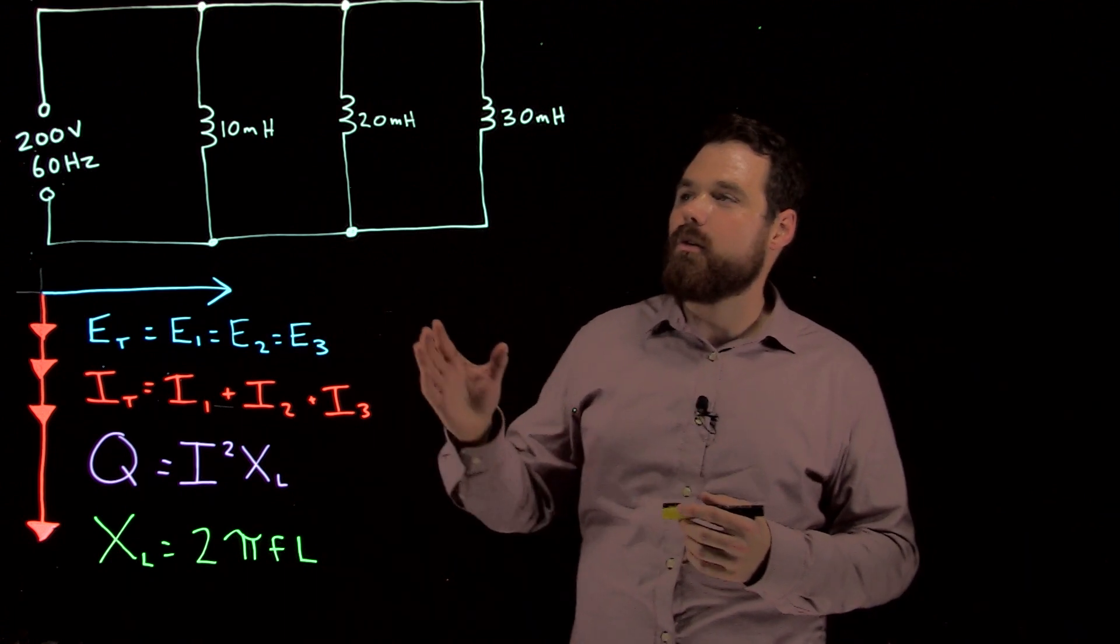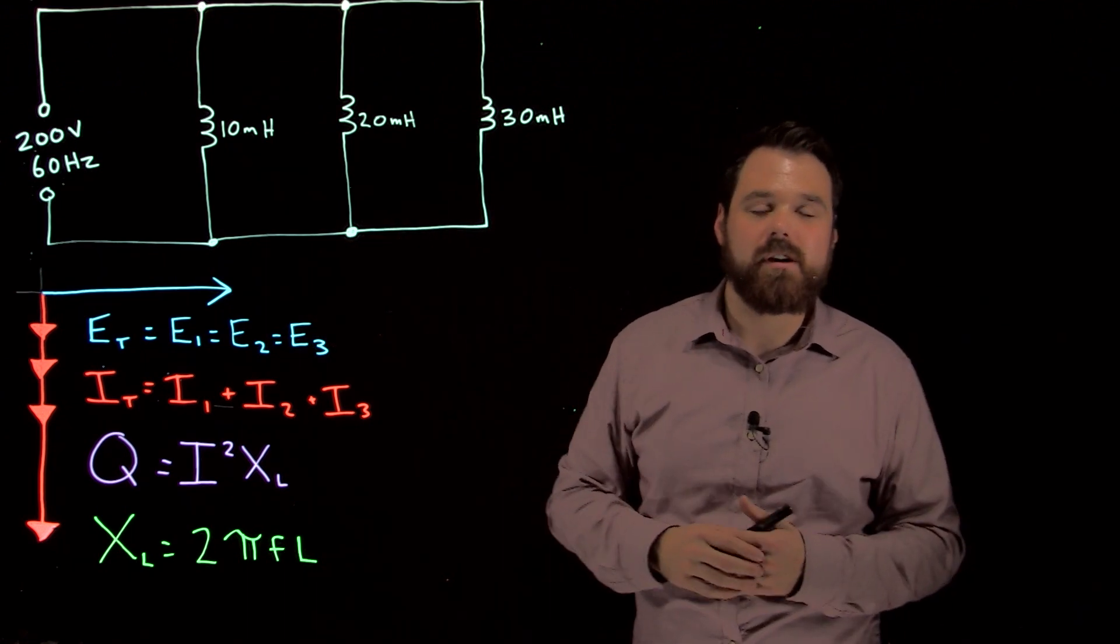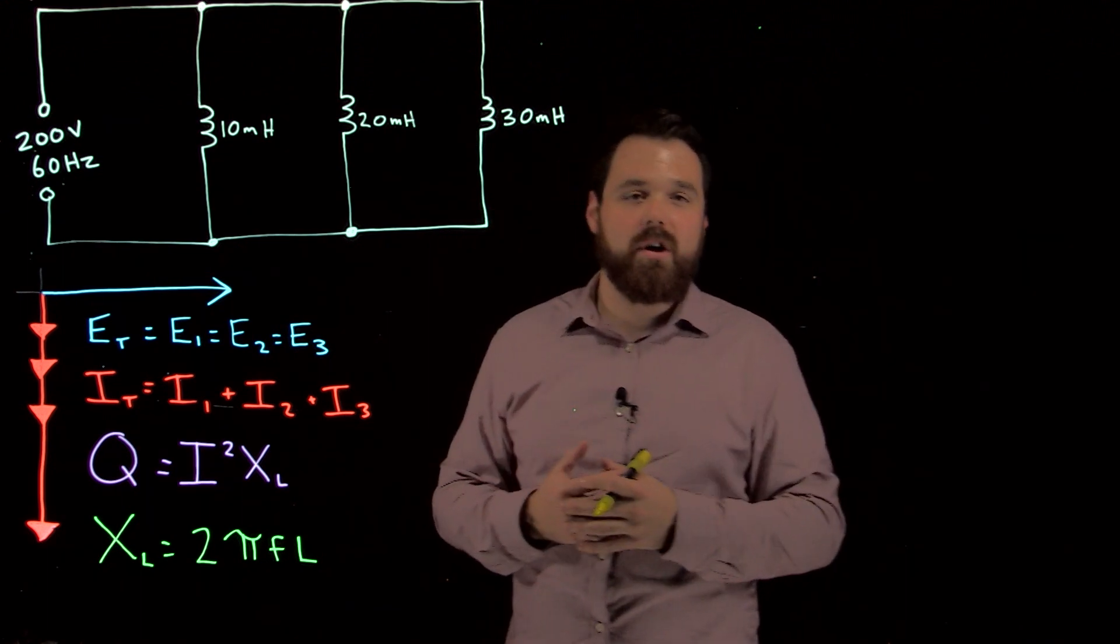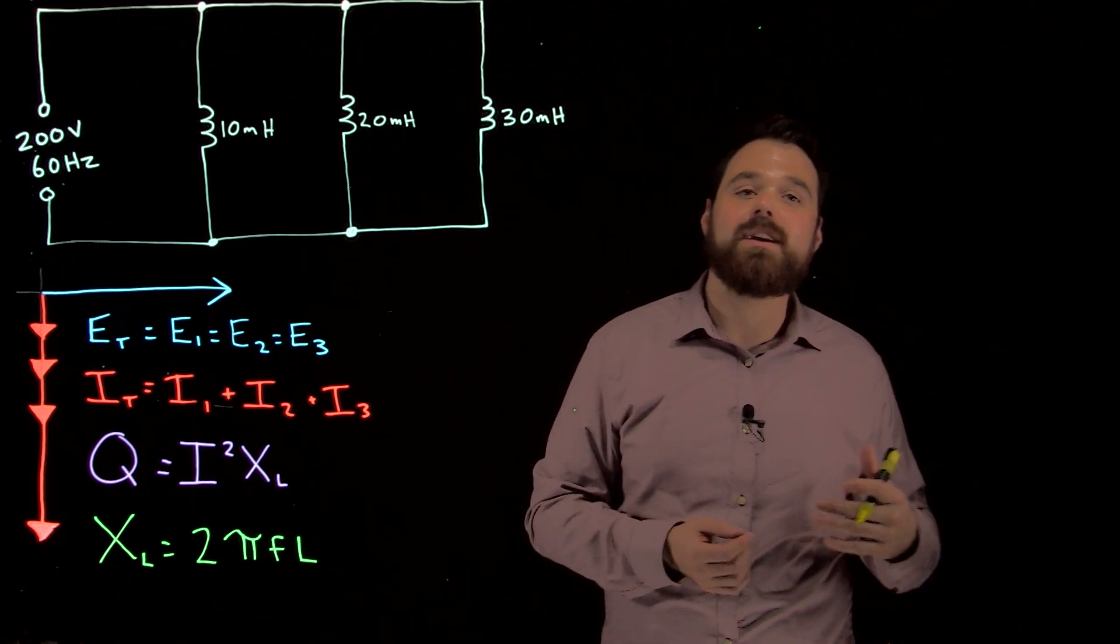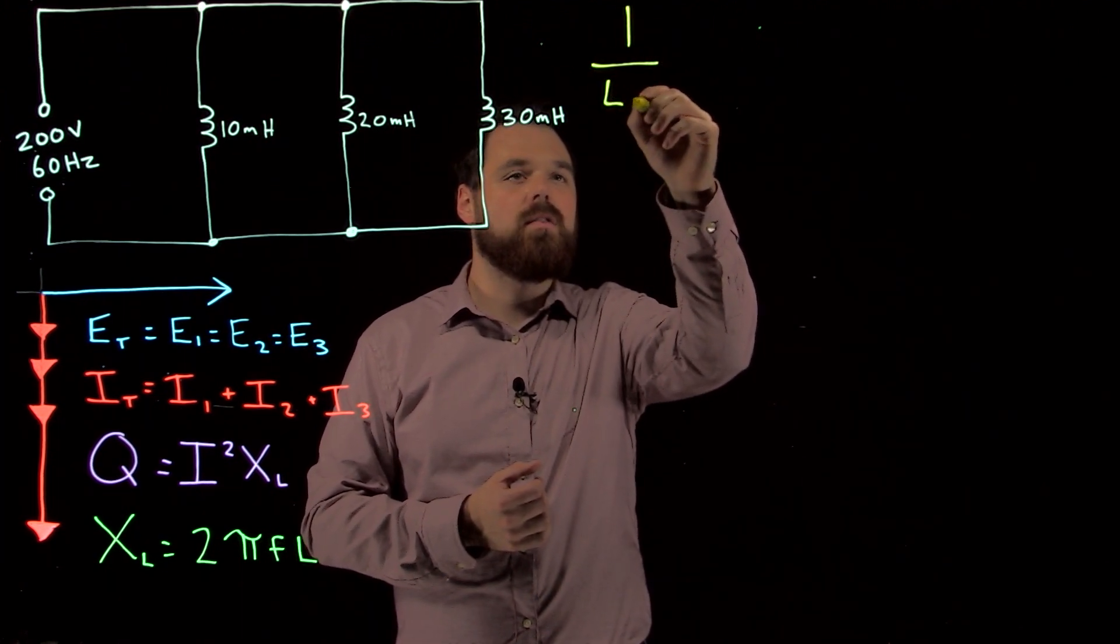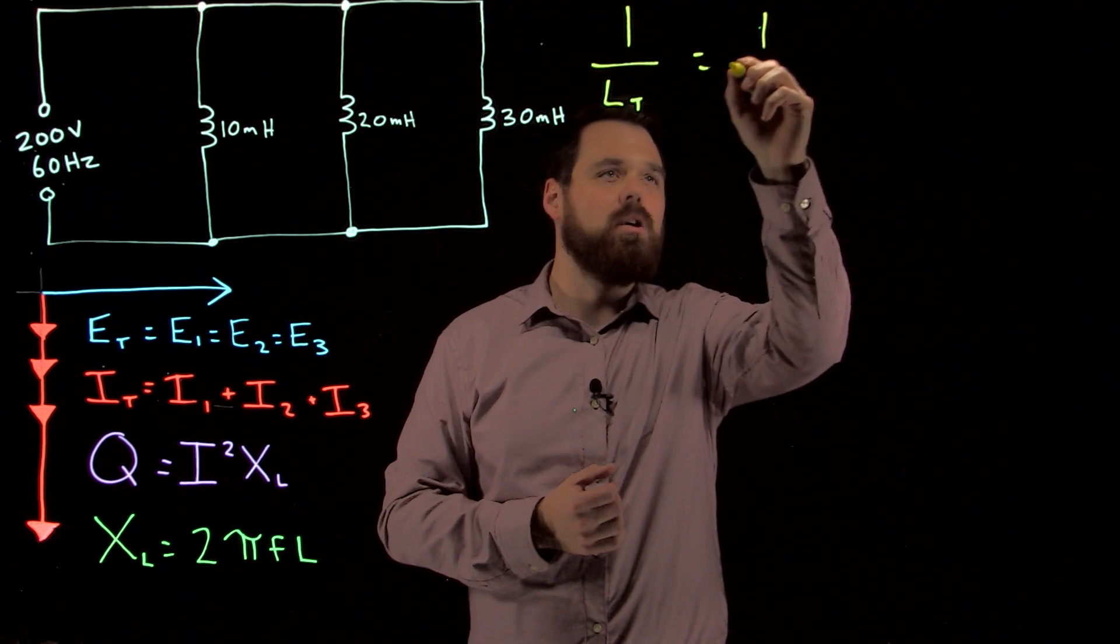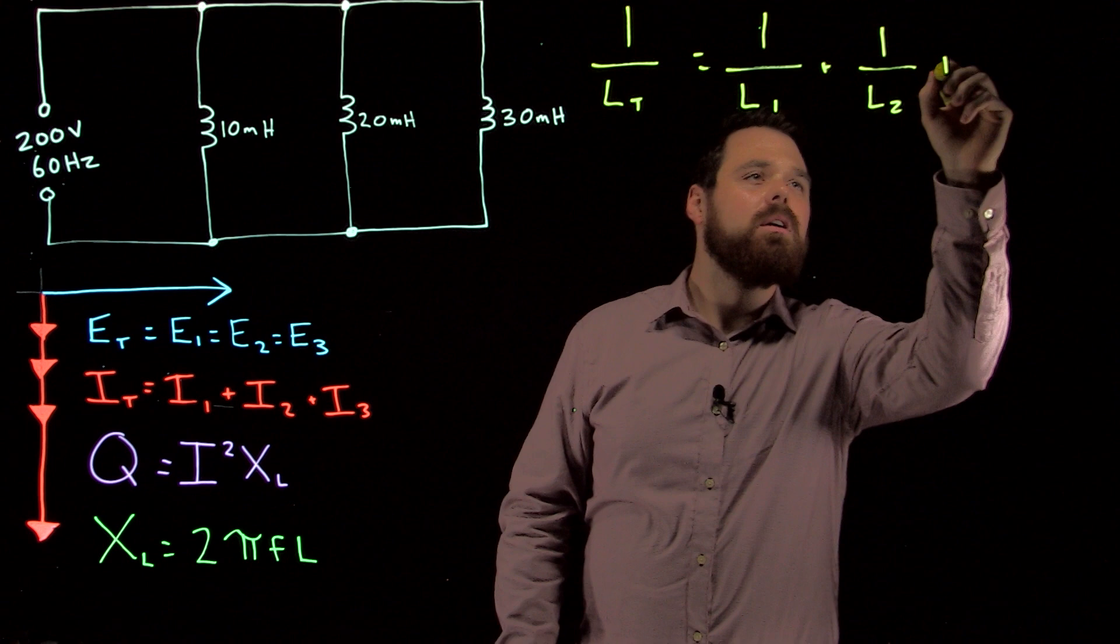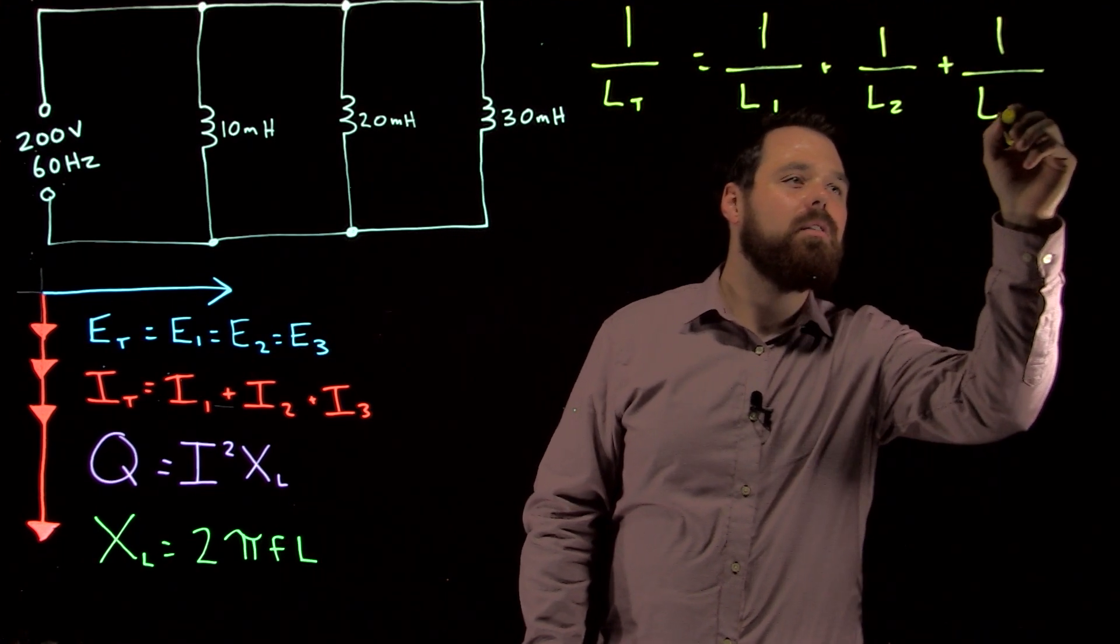When we're adding three inductors or any number of inductors in parallel like this, we get a new formula. Because we're giving multiple paths for current to flow, we see our inductance actually adds up inversely. We're going to go 1 over L total equals 1 over L1 plus 1 over L2 plus 1 over L3.